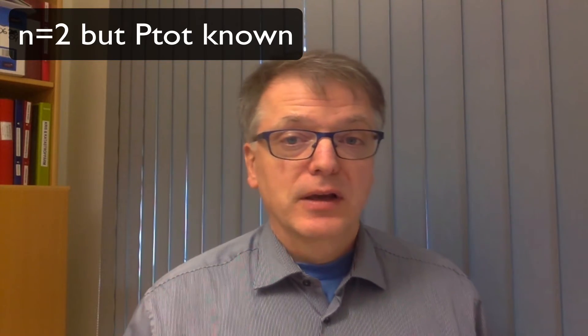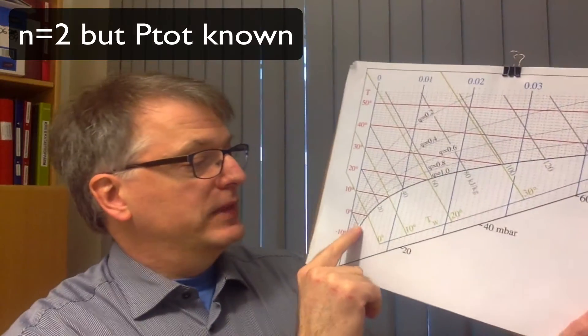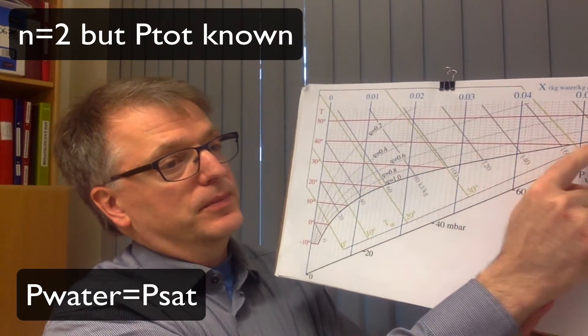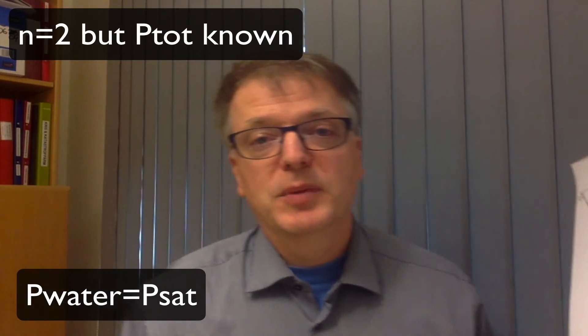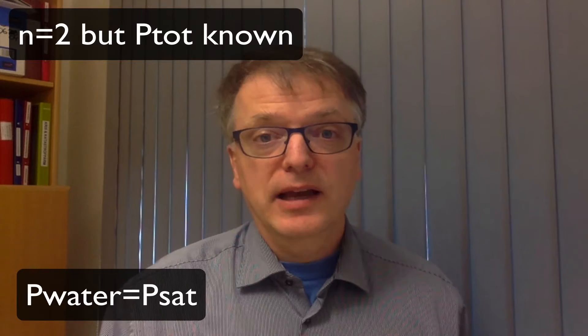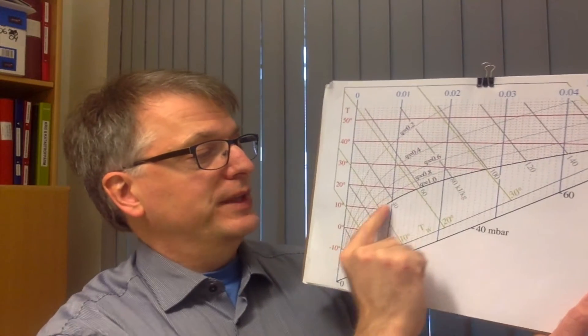If you have equilibrium between liquid water and the gas, then the partial pressure of water in that gas must be the same as the vapor pressure. And this line down here, 100% relative humidity, is exactly that line. So if you have equilibrium between liquid water and the moisture, you are on this line here.